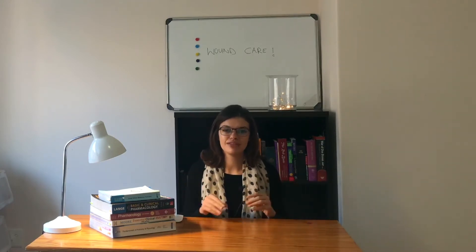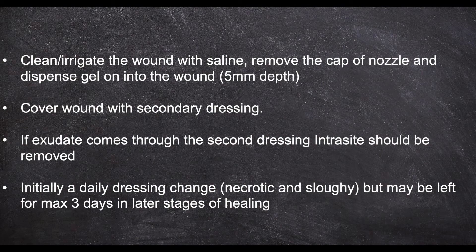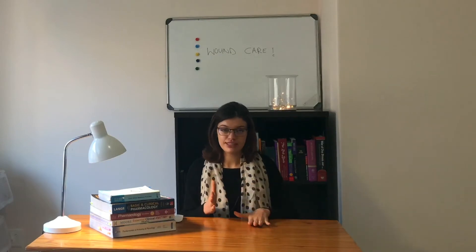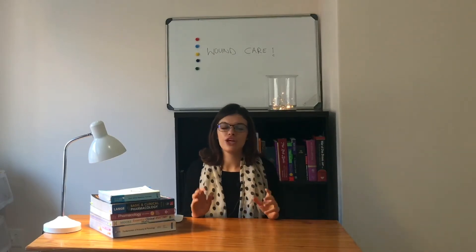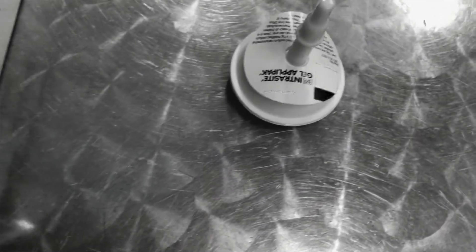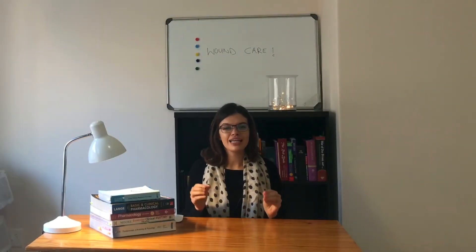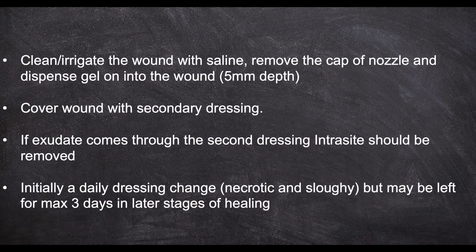To apply Intracite: first, clean or irrigate the wound with saline — from a pharmacist's perspective, you will provide the patient with a bottle of saline as part of their take-home items. Then remove the cap of the nozzle and dispense the gel into the wound to at least five millimeters depth. Cover the wound with a secondary dressing; if exudate comes through the secondary dressing, the Intracite should be removed, as it means there is too much fluid. Initially, a daily dressing is appropriate, especially when the wound is necrotic or sloughy, but it may be left for a maximum of three days in later stages of healing.